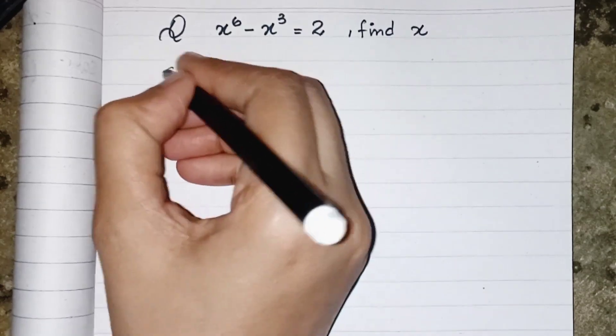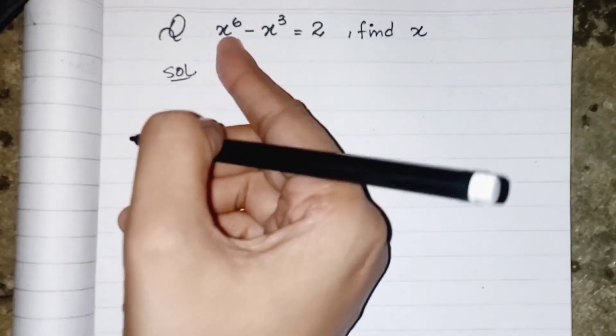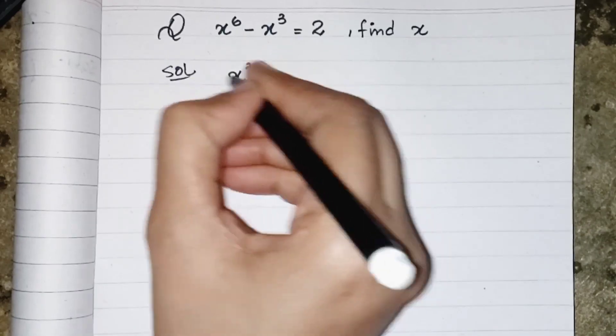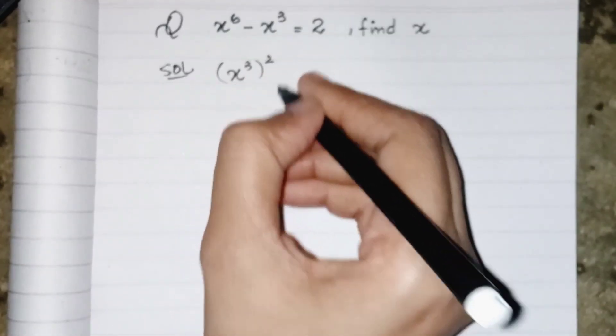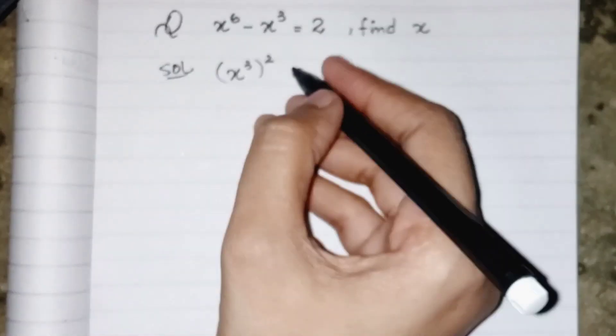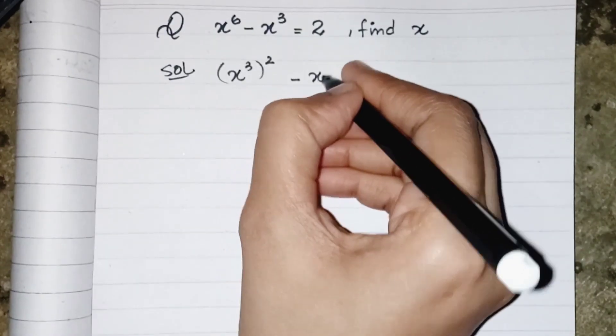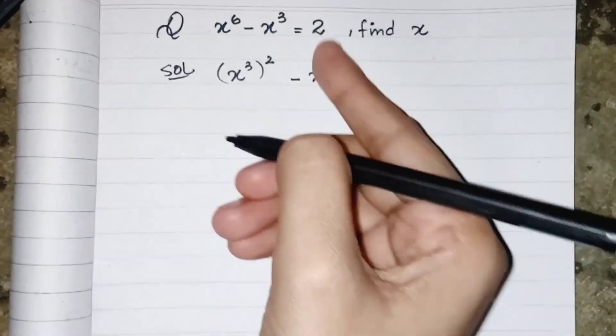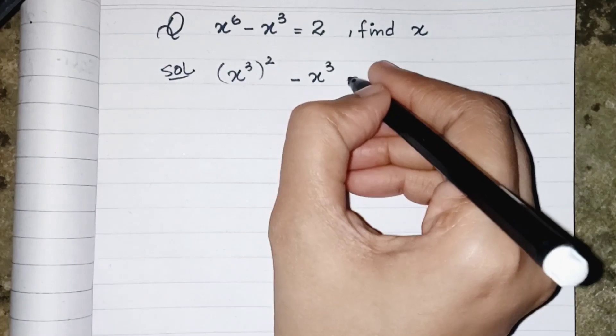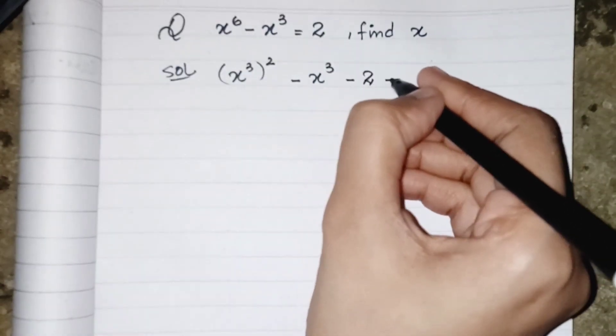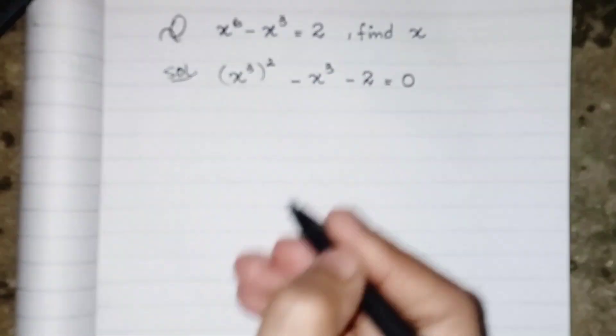So first of all we just split the power 6 into x power cube over power square, which gives us back x power 6 minus x cube, and this 2 will come to that side. So it will become as minus 2 equals to 0.